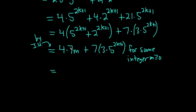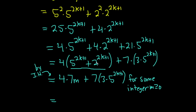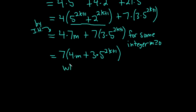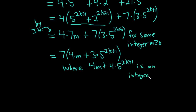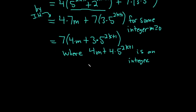This is the key step: the induction hypothesis piece got replaced with 7m because it's divisible by 7, which means it equals 7 times an integer. Now we can pull out the 7 from both expressions: 7 times (4m plus 3 times 5 to the 2k plus 1). All of that stuff in parentheses is an integer — multiplication of integers, exponentiation of integers, addition of integers all result in integers. So we have 7 times an integer, meaning this quantity is a multiple of 7, therefore it's divisible by 7.